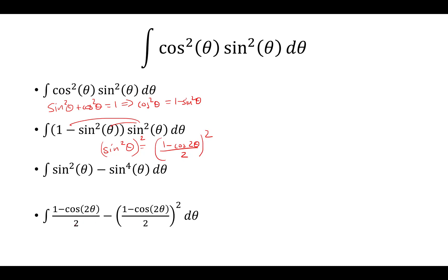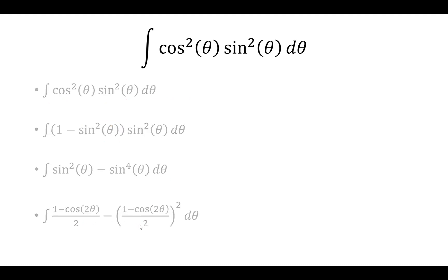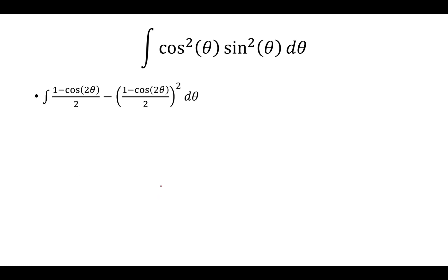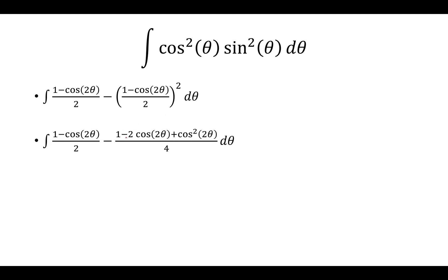So that's what we have here. We distribute 1 minus cosine 2θ squared as 1 minus 2 cosine 2θ plus cosine squared 2θ. And at this point, we just simplify.